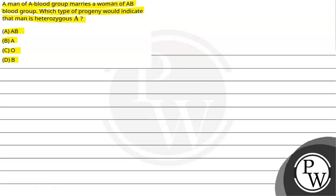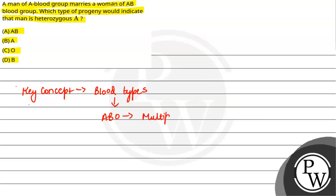Question mein puchh rahe hain ki aisi konsi progeny hai jo indicate karegi ki jo father hai woh heterozygous A hai. So the key concept here is blood types. Blood types jo hote hain, yeh hamare based hote hain on ABO blood grouping system. ABO blood grouping system mein kya hote hain? Yeh multiple alleles based hote hain.